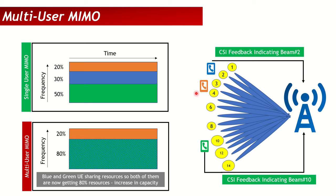If we have 200 beams, each beam is much narrower and more directive. A UE on beam 10 and another on beam 50 have 40 beams of separation, making them compatible for pairing. They can then share 100% of resources, potentially increasing cell capacity to 300 Mbps across three UEs. This is how MU-MIMO boosts throughput.